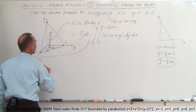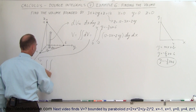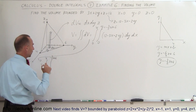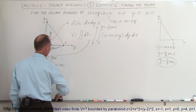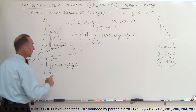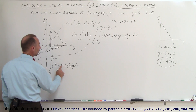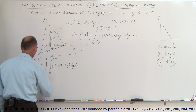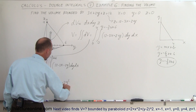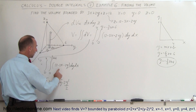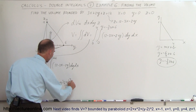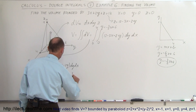Let's start the integration. This equals the double integral from 0 to 4 in x, and from 0 to minus 3 over 2 times x plus 6 in y, of the quantity 12 minus 3x minus 2y, dy dx. When we integrate with respect to y — noting that x is simply a constant — we get 12y minus 3xy minus y squared, evaluated from 0 to minus 3 over 2 times x plus 6.